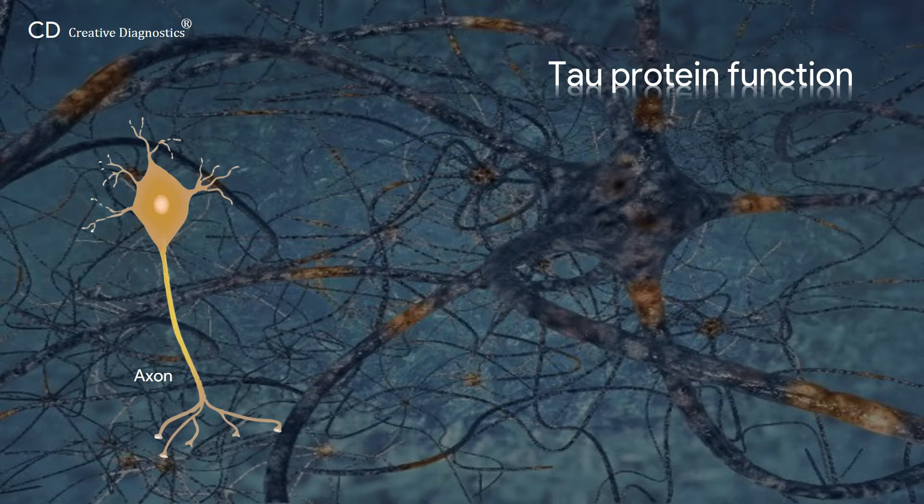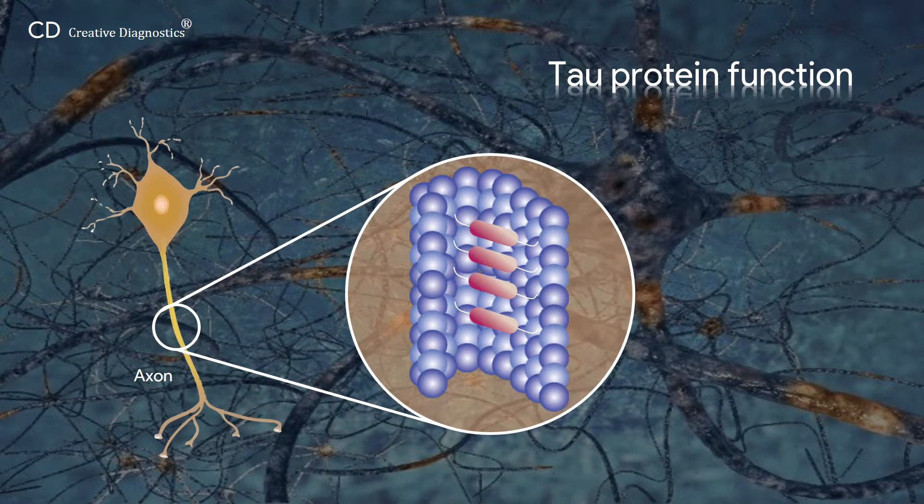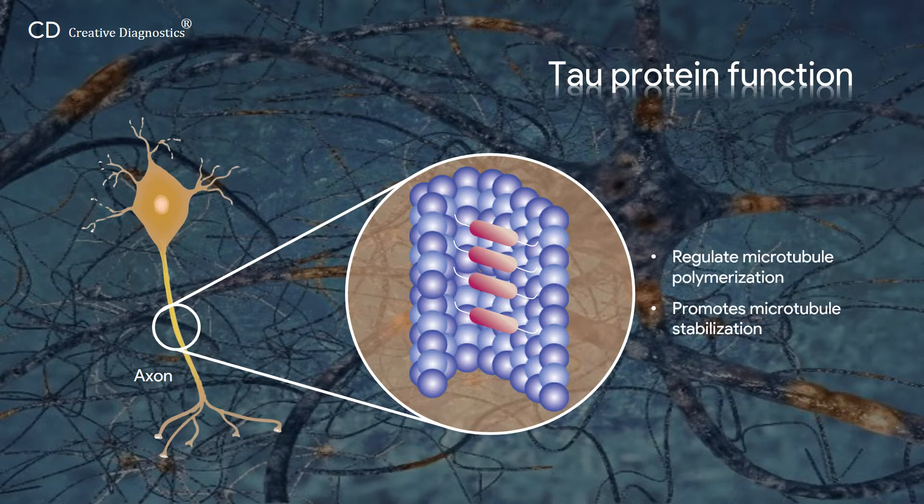First discovered as a microtubule-associated protein in 1975, Tau protein is primarily found in axons, where it regulates microtubule polymerization and promotes microtubule stabilization.